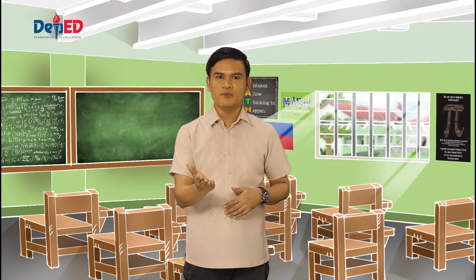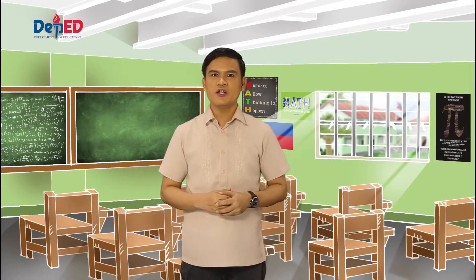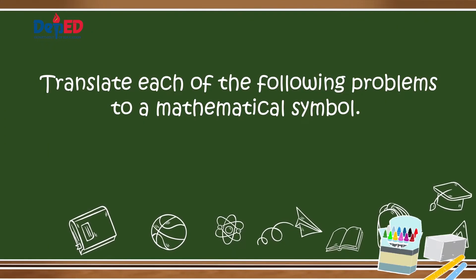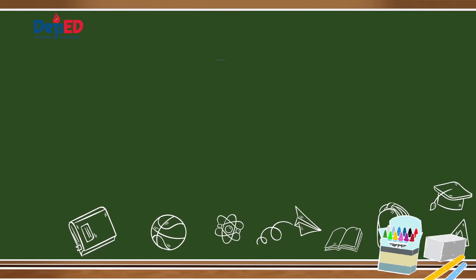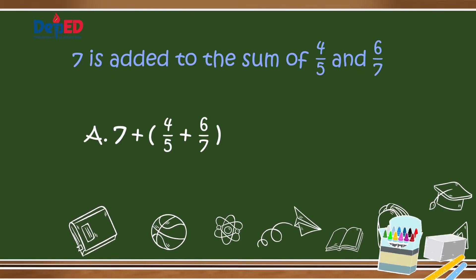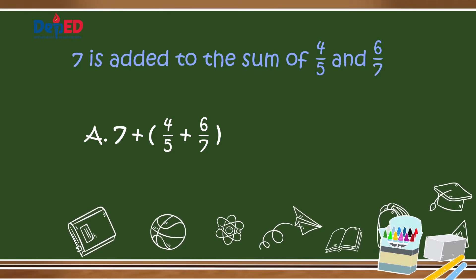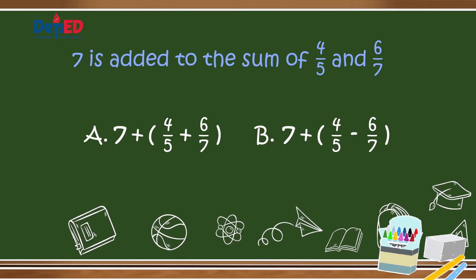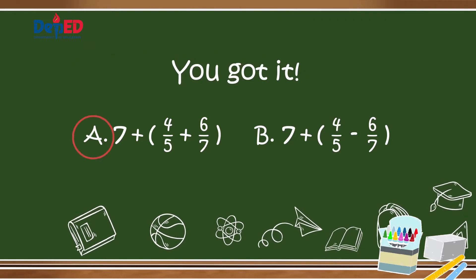Get your Self-Learning Module. Let us try to answer Numbers 1 and 2 of Learning Task 1. Translate each of the following problems to a mathematical symbol. Number 1: 7 is added to the sum of 4 fifths and 6 sevenths. Is it A: 7 plus 4 fifths plus 6 sevenths, or B: 7 plus 4 fifths minus 6 sevenths? You got it! It's A.